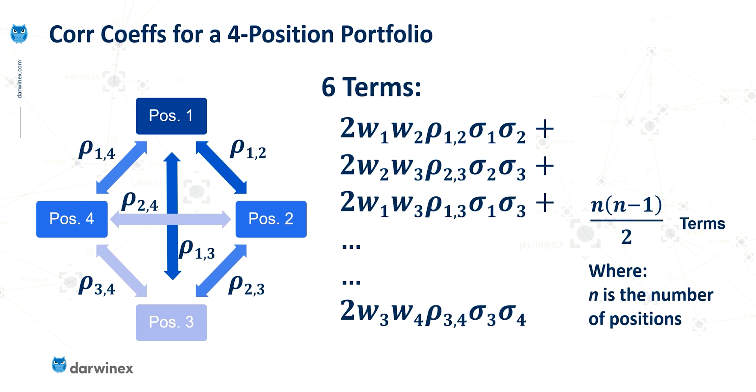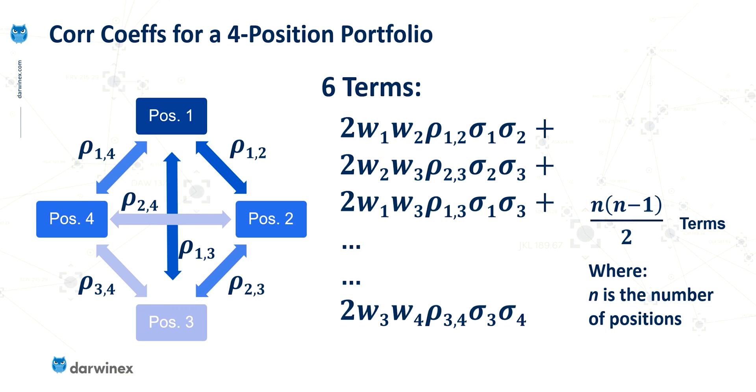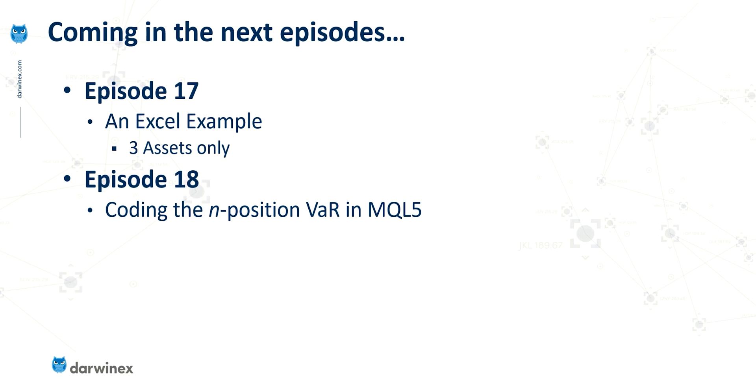Now in terms of doing these calculations in Excel it gets progressively more difficult the more positions you have. With code on the other hand the complexity doesn't increase as long as we set up our calculation loops correctly. So in the next episode when I look at Excel I'm going to limit this to just three positions or three assets. But then in the following episode when I code this in MQL5 I'll do it in a way that can be used for any number of positions.